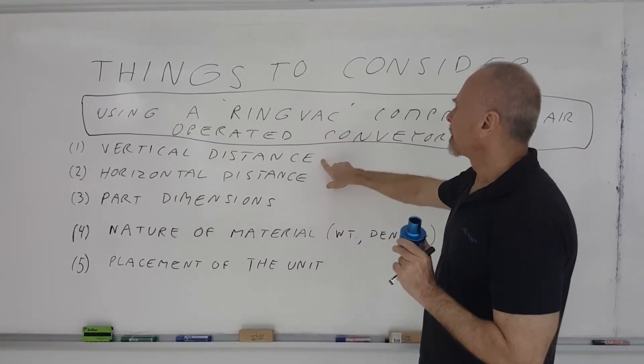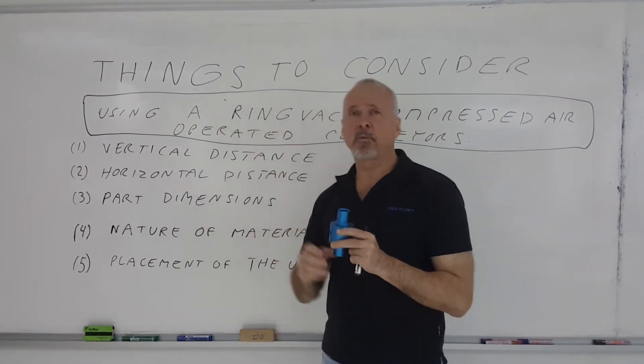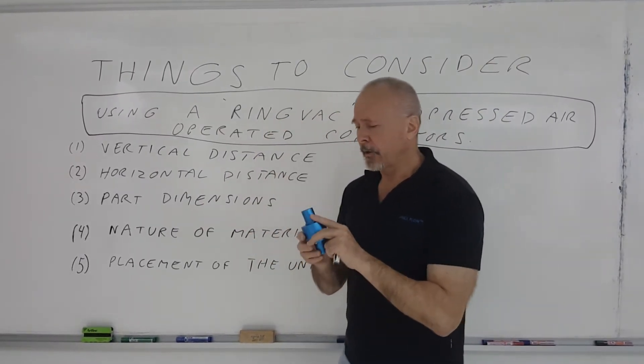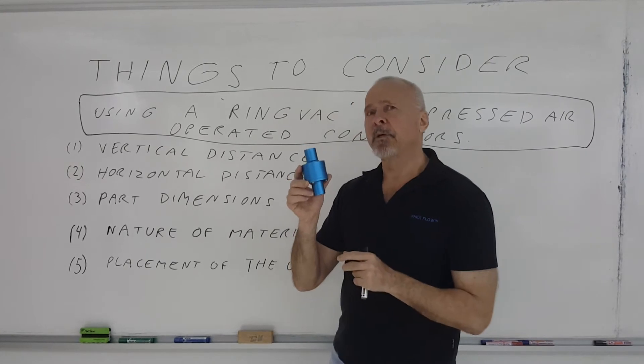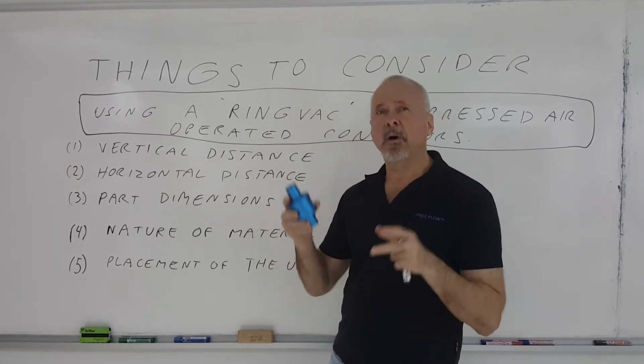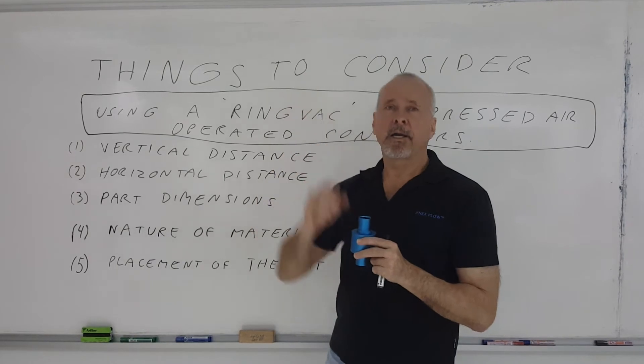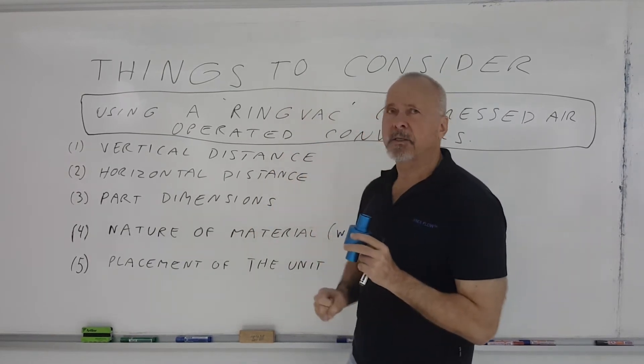First of all is the vertical distance, how far up you actually want to convey. Now the larger the unit, the lower the vacuum it produces, so you want to get the unit as small as possible, especially if you're going higher up. So vertical distance is a consideration.